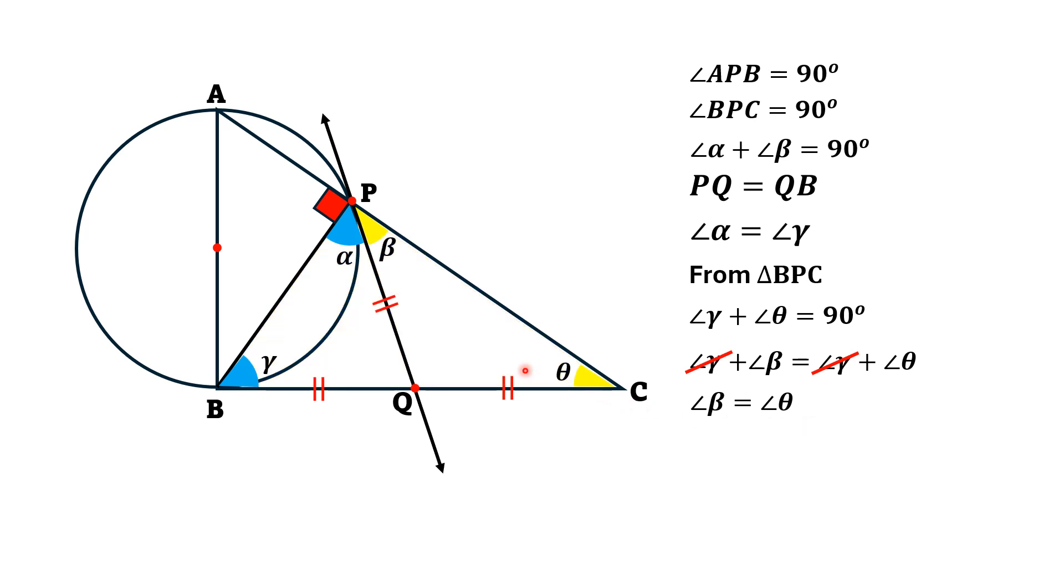Now, by this green triangle, we have two sides equal because this is an isosceles triangle. So, PQ equals QC. Since PQ equals QB from this equation and PQ equals QC, we know that if A equals B and B equals C, then A equals C.